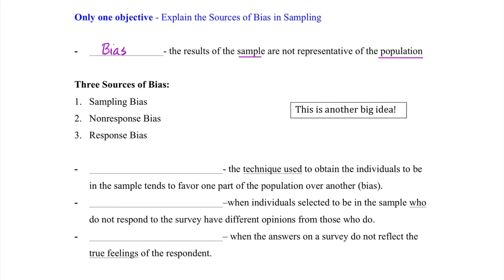Now there are three sources of bias: sampling bias, non-response bias, and response bias. Sampling bias occurs when the technique used to obtain the individuals to be in the sample tends to favor one part of the population over another.